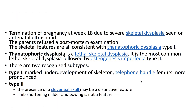This is a case of a terminated pregnancy at week 18 due to severe skeletal dysplasia seen on antenatal ultrasound. The skeletal features are all consistent with thanatophoric dysplasia type 1. Thanatophoric dysplasia is a lethal skeletal dysplasia — it is the most common lethal skeletal dysplasia, followed by osteogenesis imperfecta type 2.